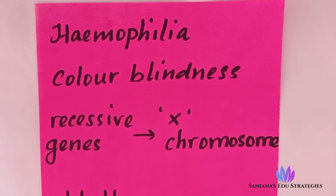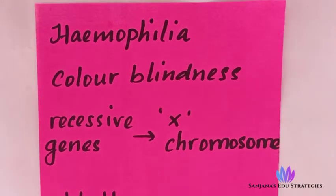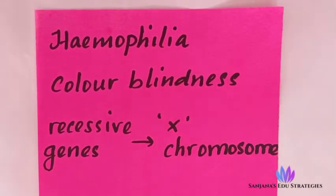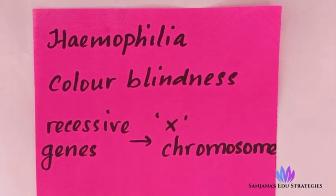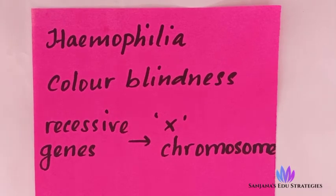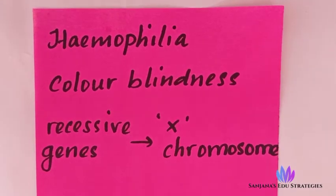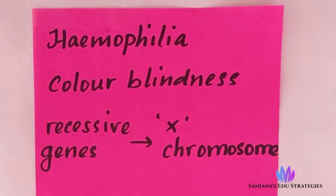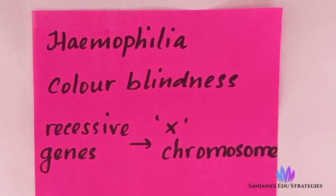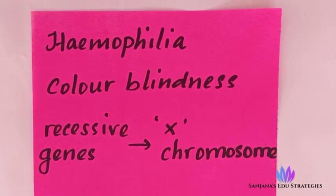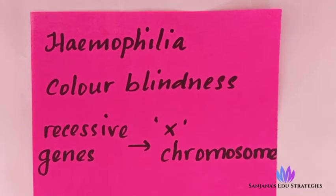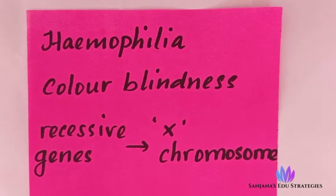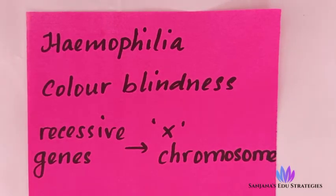Welcome students. In the earlier session we already saw about genotype, phenotype, dominant and recessive alleles. In this session we are going to learn about two diseases: hemophilia and color blindness. These are genetic diseases that are inherited from parents to offspring.